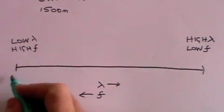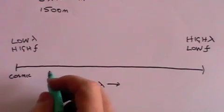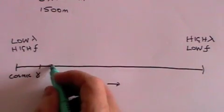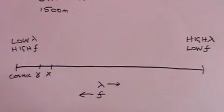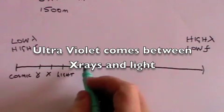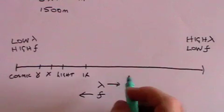And at this end you've got cosmic rays, which come out of the sun, followed by gamma rays, which are part of the radioactive radiation, and then x-rays, which go right through you and are used in hospitals, and then ordinary visible light, and then infrared radiation, which is essentially heat.